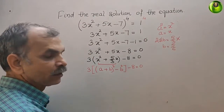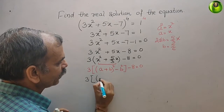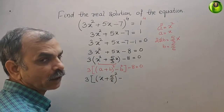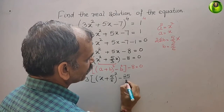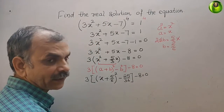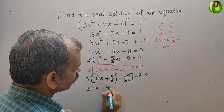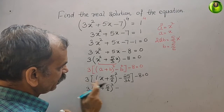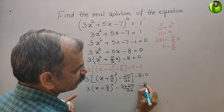Now substitute a and b: we get 3[(x + 5/6)² - 25/36] - 8 = 0. Opening the bracket: 3(x + 5/6)² - 3×(25/36) - 8 = 0.